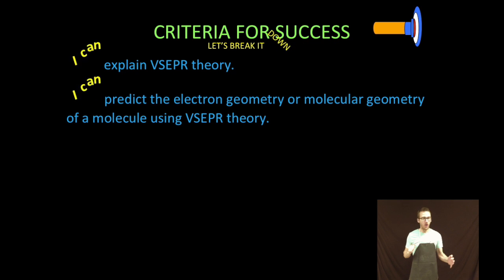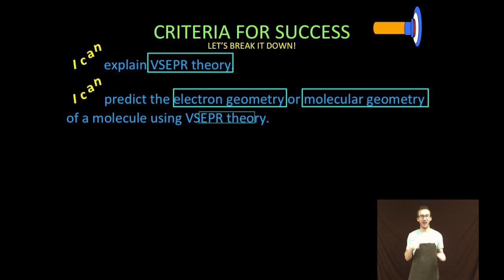Okay, so as always let's take a couple moments and break it down. First thing we're gonna do is explain what the heck this valence shell electron pair repulsion theory is. And then two, we are going to predict the electron geometry or molecular geometry of a molecule using this VSEPR theory. So basically this video is all about what are the shapes of the molecules and how does VSEPR theory help us predict what those shapes will be.